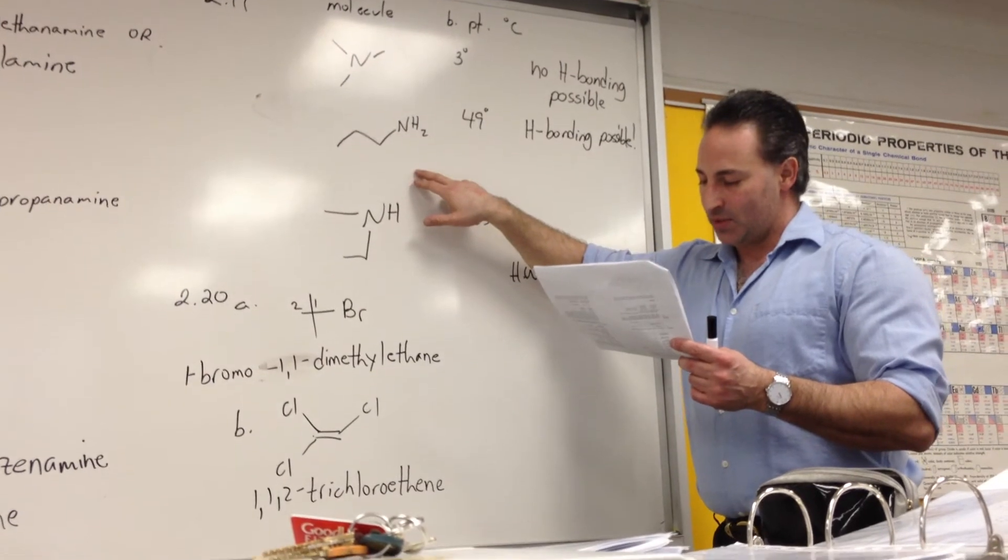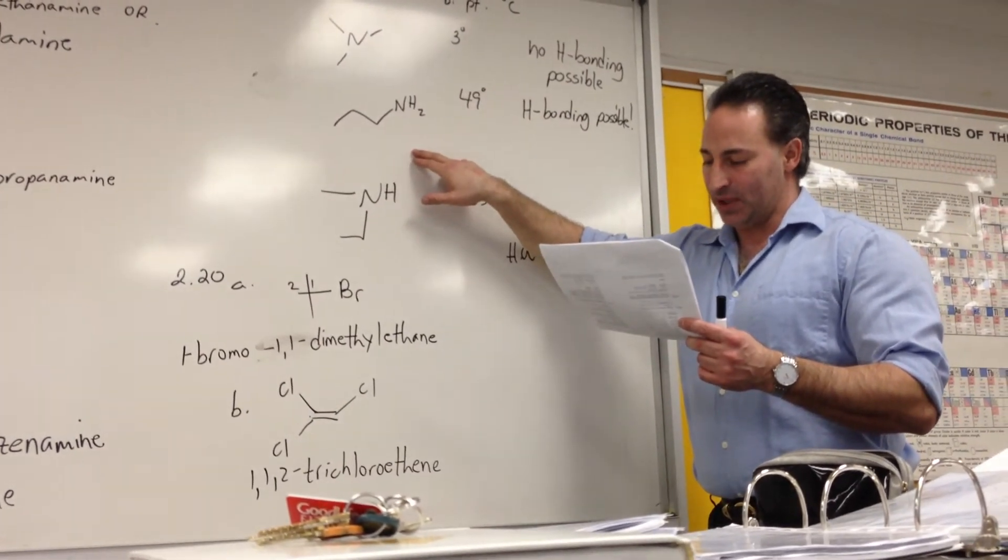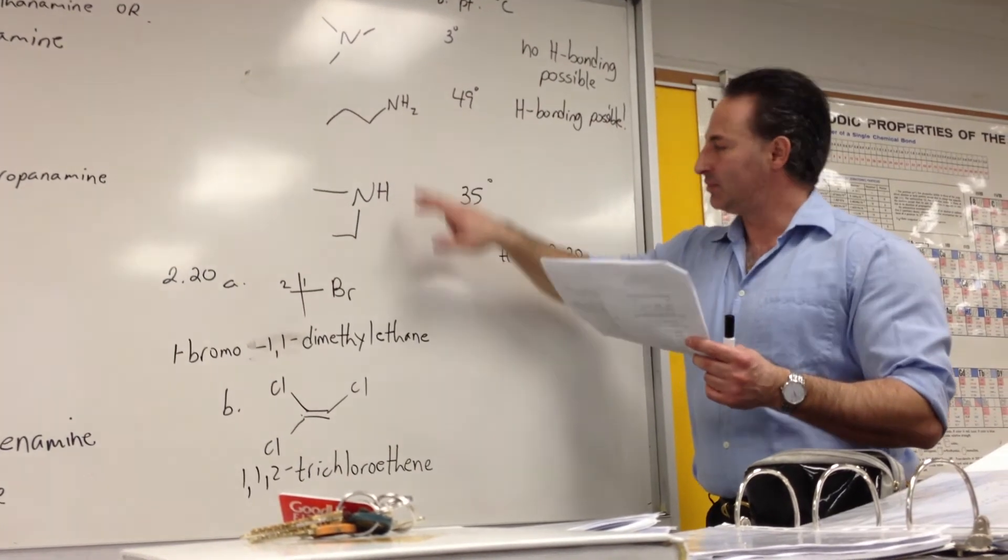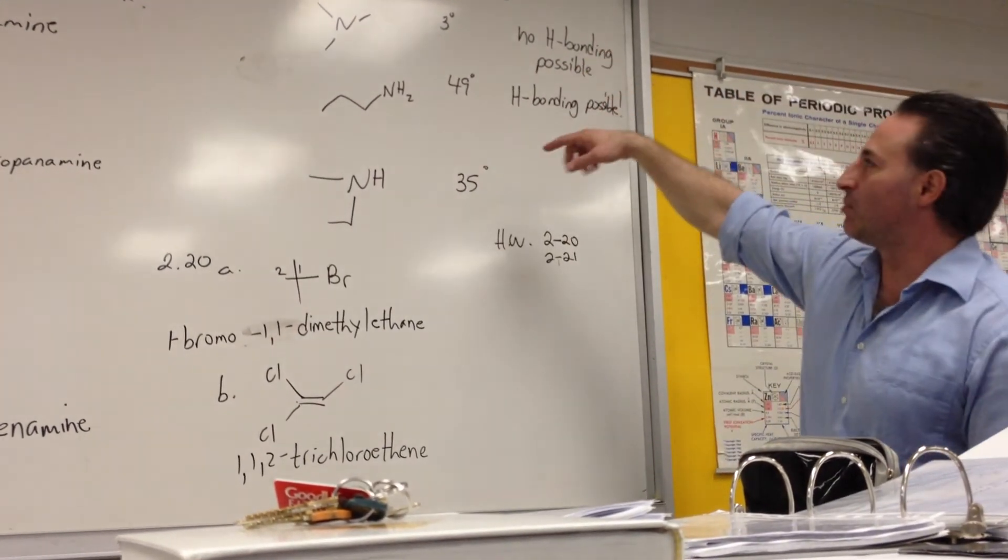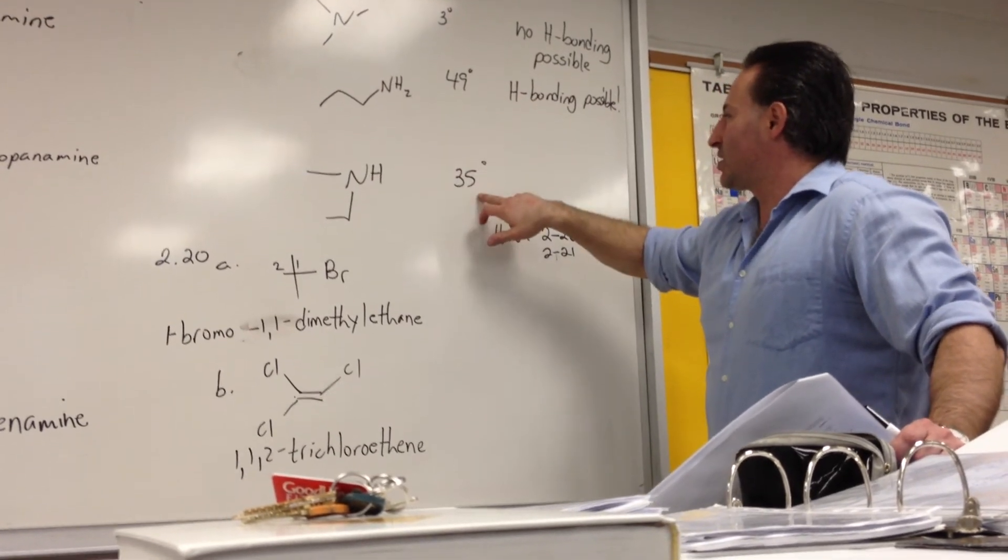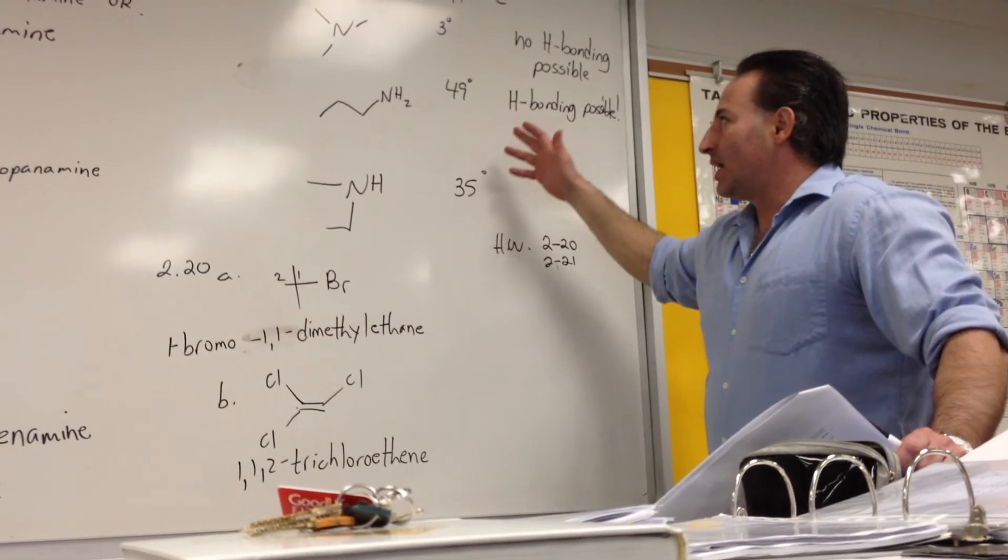Or also known as trimethylamine, as compared with the isomeric propanamine, propylamine, this one. And N-methylethanamine, this one. So you see the boiling points. This one boils at 3 degrees. This one boils at 49. This one boils at 35.